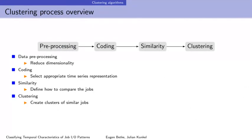We captured one million jobs and converted them to segmented data, but we still had too much data for analysis. We had to reduce the data further in a preprocessing step. We needed a good, suitable representation of the timeline, a similarity function that can compare two jobs and tell us to what degree they are similar, and a clustering process that uses similarity to group similar jobs together.